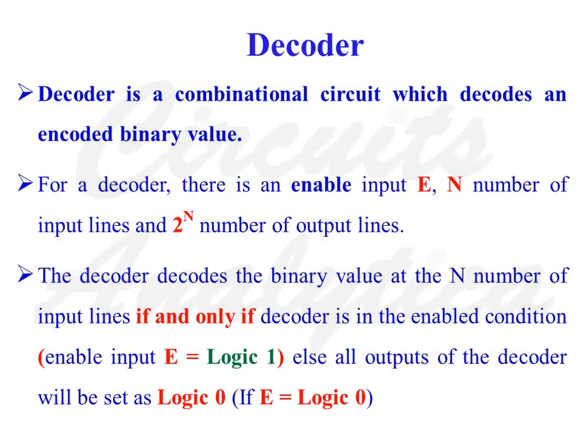A decoder is a combinational circuit which decodes an encoded binary value. For a decoder, there is an enable input E, n number of input lines, and 2 raised to n number of output lines. The decoder decodes the binary value at the n number of input lines.